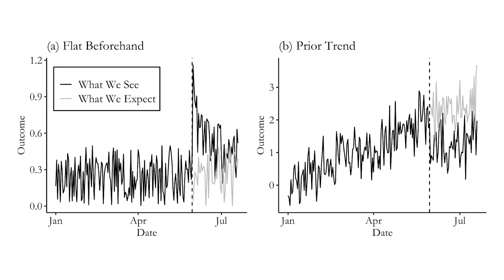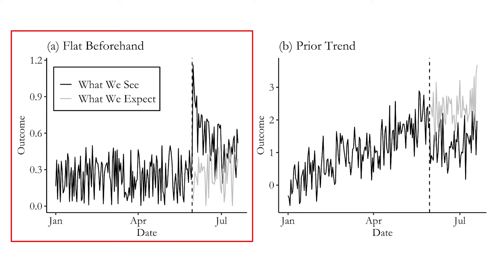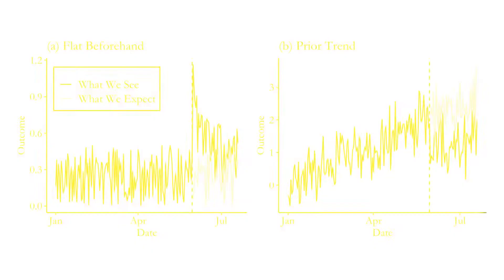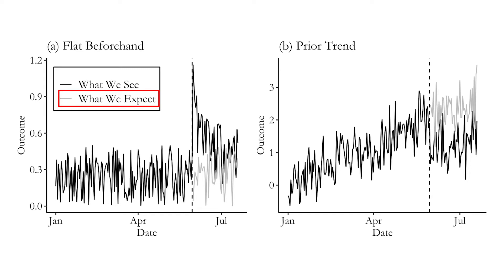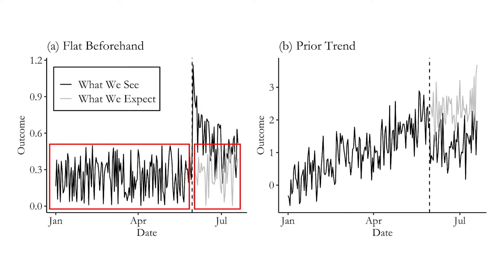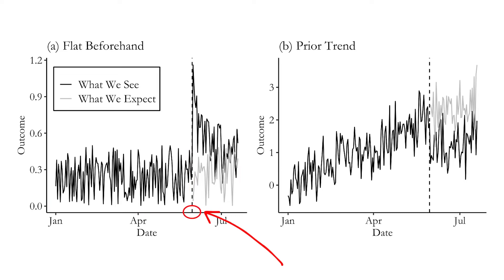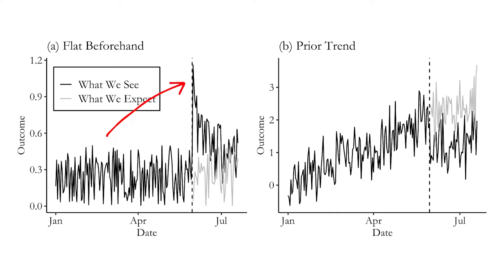Looking at the graphs: in the first graph, we have a time series measured at many points in time. It jumps up and down but there's no real trend — it's flat as you go along. Then the treatment happens. What would we expect if treatment had not occurred? Since we saw no trend, we'd expect that to continue. So we predict the flat trend would have continued afterward. But instead, at the point of treatment, the time series jumps up and then fades back down. This immediately shows a positive treatment effect right at the period treatment goes into effect, which then fades back toward what we would have expected over time.